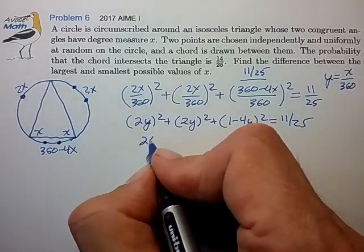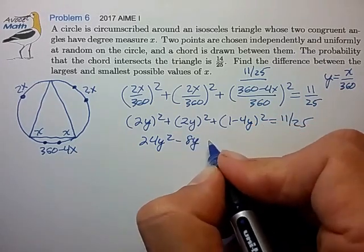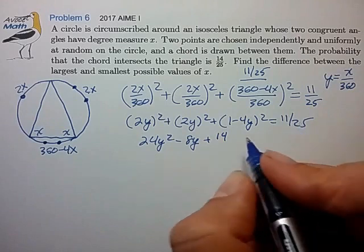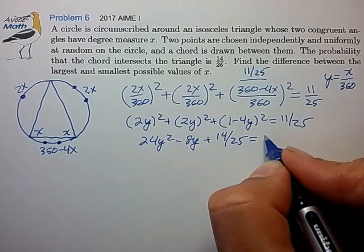Expand this and bring some terms together. 1 minus 11 over 25 is 14 over 25, and that's equal to 0.